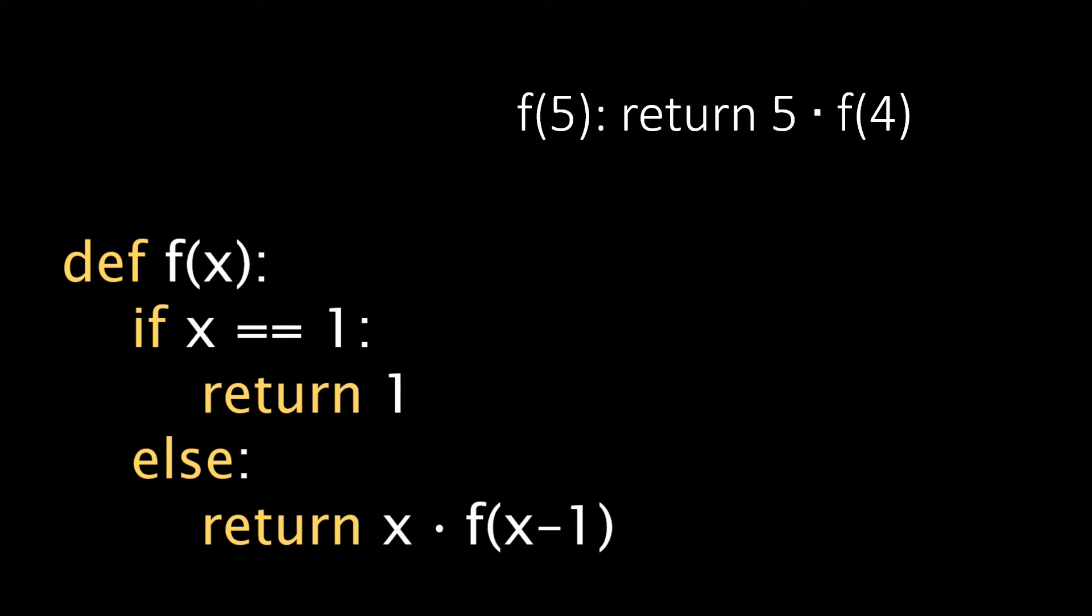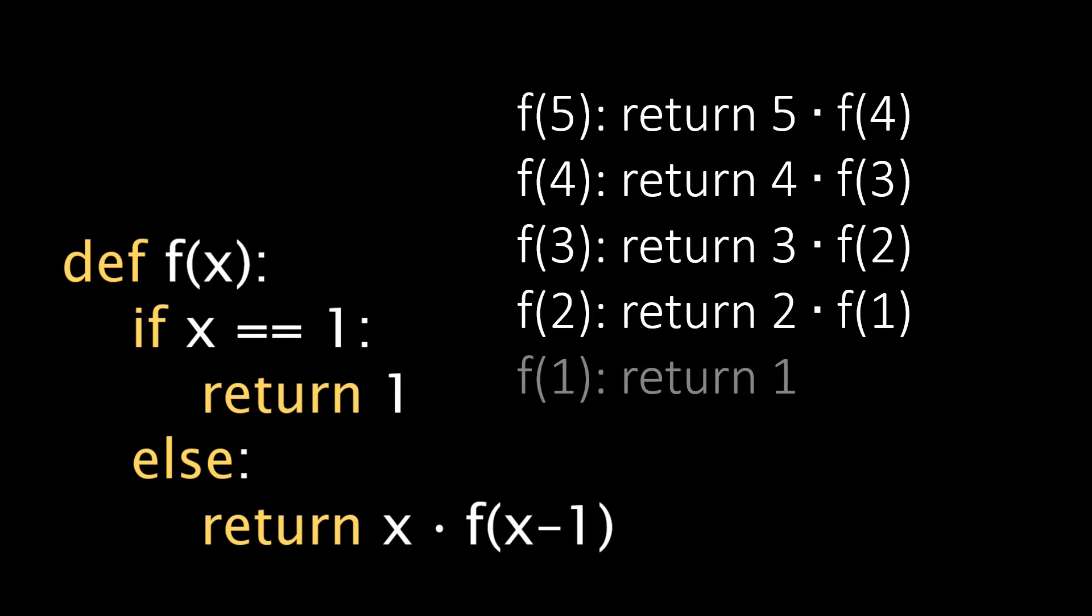The function returns 4 times f of 3, then f of 3 is called, then f of 2, and finally f of 1. Now in this last case, the input x is indeed equal to 1, so we immediately return 1 to the calling function f of 2, which then can return 2 times 1.